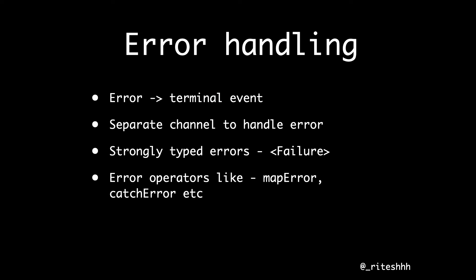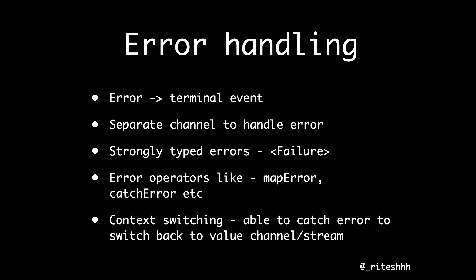Combine gave you special operators like mapError and catch. These dedicated error handling operators made error handling much easier. If you had an error you wanted to catch and return a default value, you could catch it as part of your pipeline. In async/await, you have to catch in a catch block and then do something else — it kind of breaks the flow, but that's what async/await is. Combine also had context switching where it could move from a value stream to an error stream and back, depending on what operators you use.